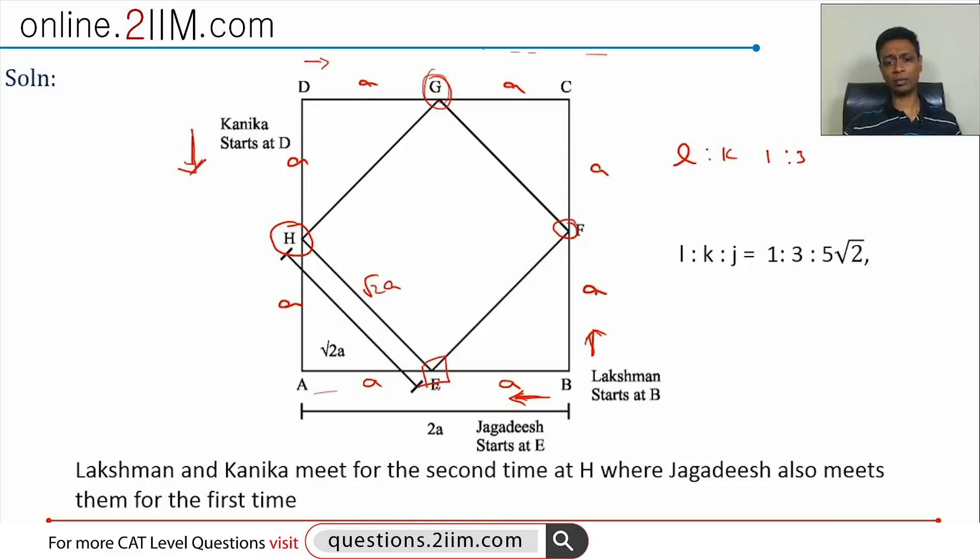For the second time, Kanika would proceed on and come all the way till H, so she would end up totally traveling 9A to Lakshman's 3A. The ratio is 1 is to 3, which is what we've been given. So we've established one simple thing: Kanika is traveling in this direction and Lakshman is traveling in this direction.